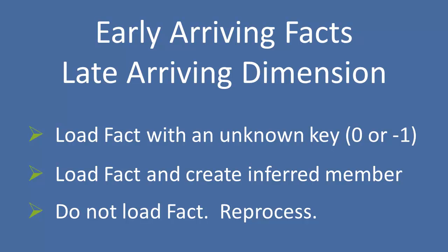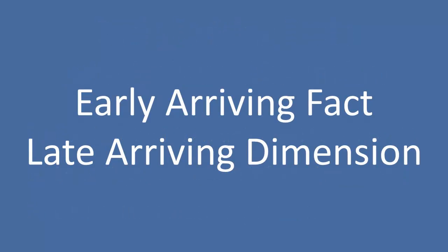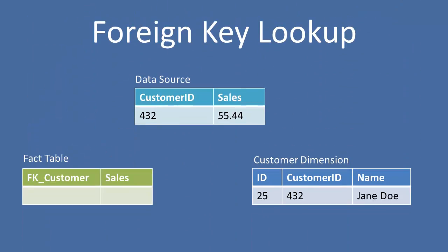But if we do decide to load it, we now have a foreign key that needs to have a value, and that value is going to be either an unknown or an inferred member. So let's take a closer look. Whenever we have a foreign key lookup — just as a review — our data source here, the top table with the 432 customer ID, we're going to try to bounce that off of our customer dimension to look up the surrogate value, 25 in this case, so that we can place it in our fact table. This is a successful foreign key lookup.